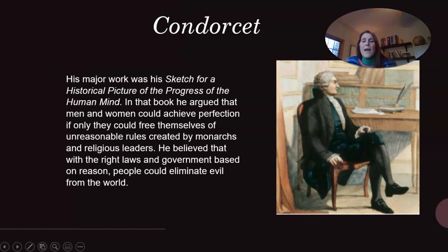Condorcet's major work was his Sketch for a Historical Picture of the Progress of the Human Mind. In that book, he argued that men and women could achieve perfection if only they could free themselves of unreasonable rules created by monarchs and religious leaders. He believed that with the right laws and government based on reason, people could eliminate evil from the world.